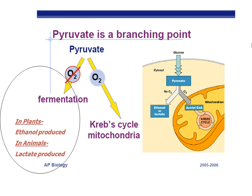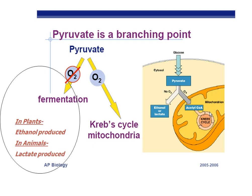Pyruvate is the branching point — remember, pyruvate is made at the end of glycolysis. If you have oxygen, we're going to do all the fun stuff in the mitochondria: the Krebs cycle and the electron transport chain, making lots of ATP. But what if you don't have oxygen? Everything gets backed up — the electrons have no place to go, so they just kind of hang out on the carrier proteins. Eventually you use up all your NAD and FAD to make NADH and FADH2. They can't lose their electrons, so they stay as NADH and FADH2, and you can't regenerate your NAD. So what ends up happening is, with no oxygen, you go through a fermentation pathway.